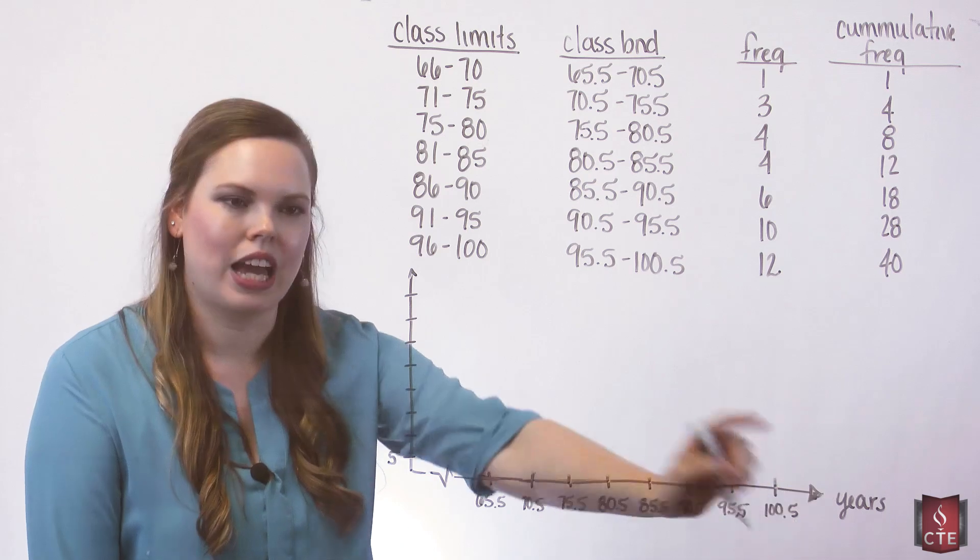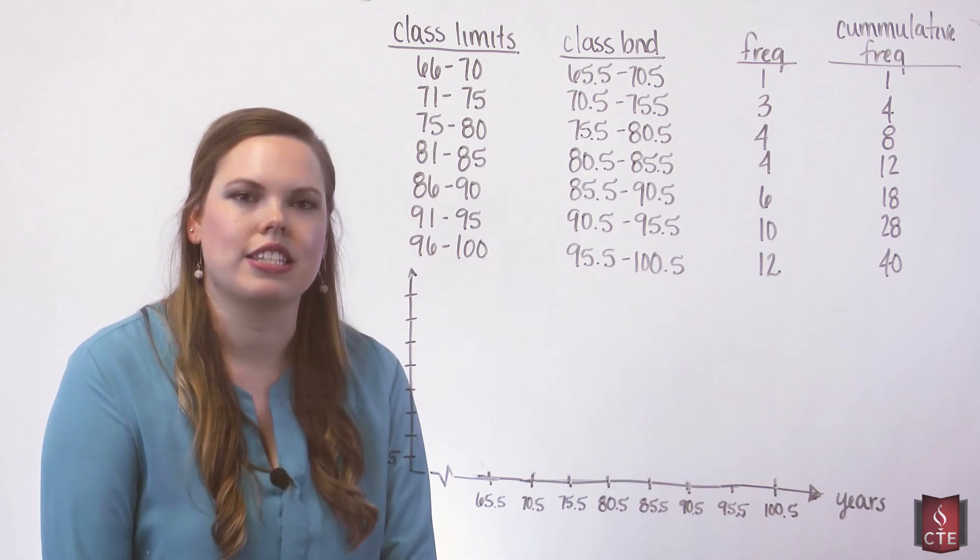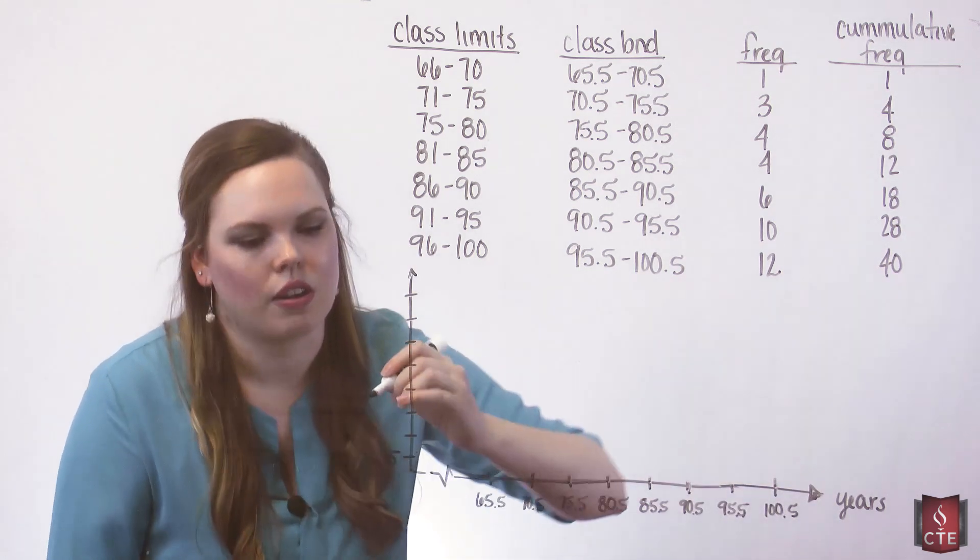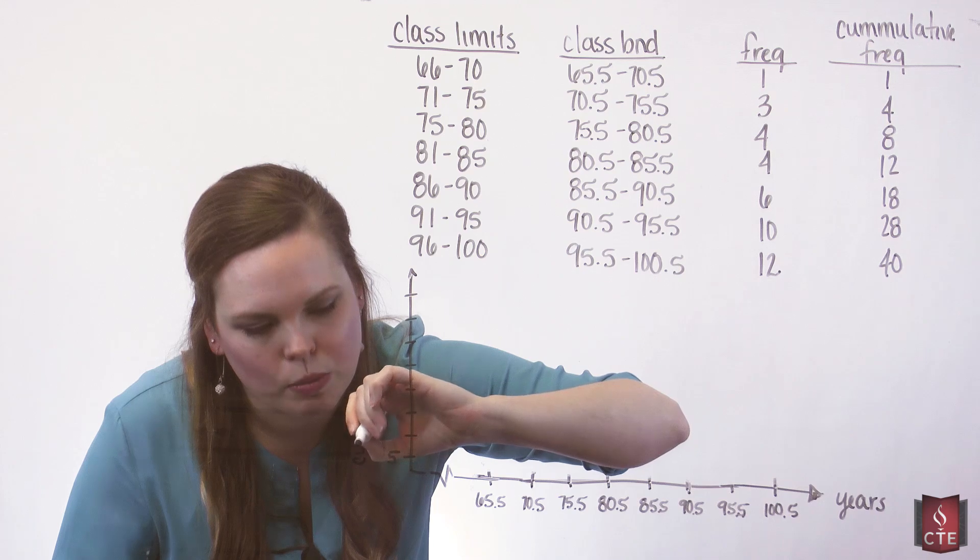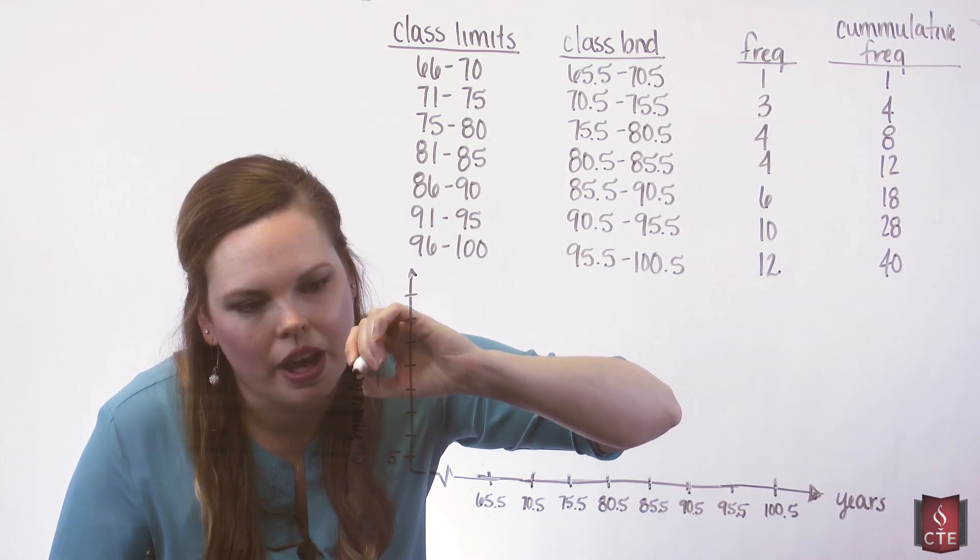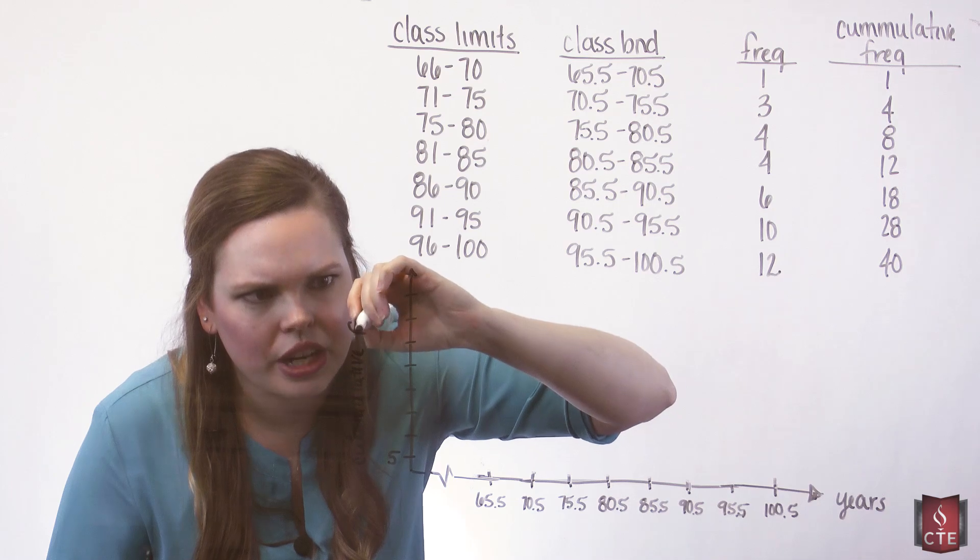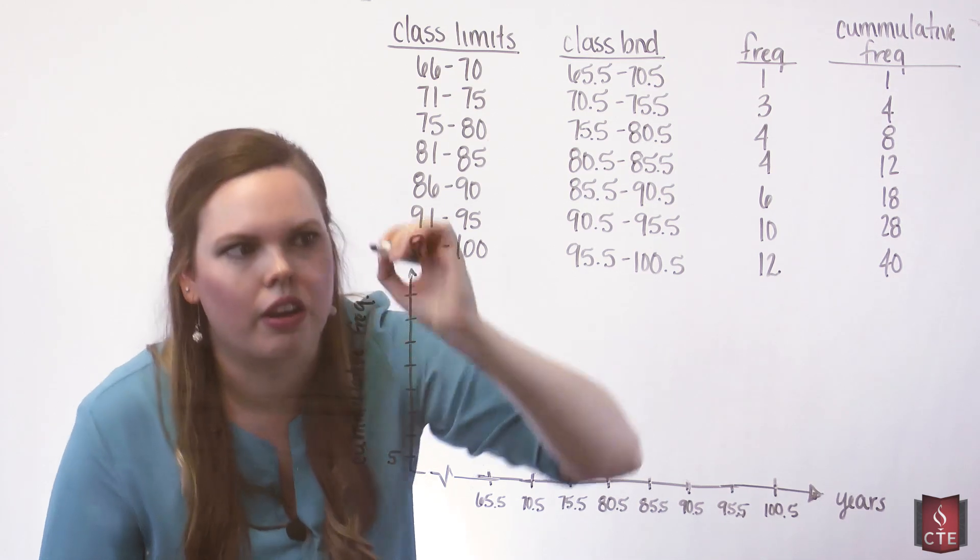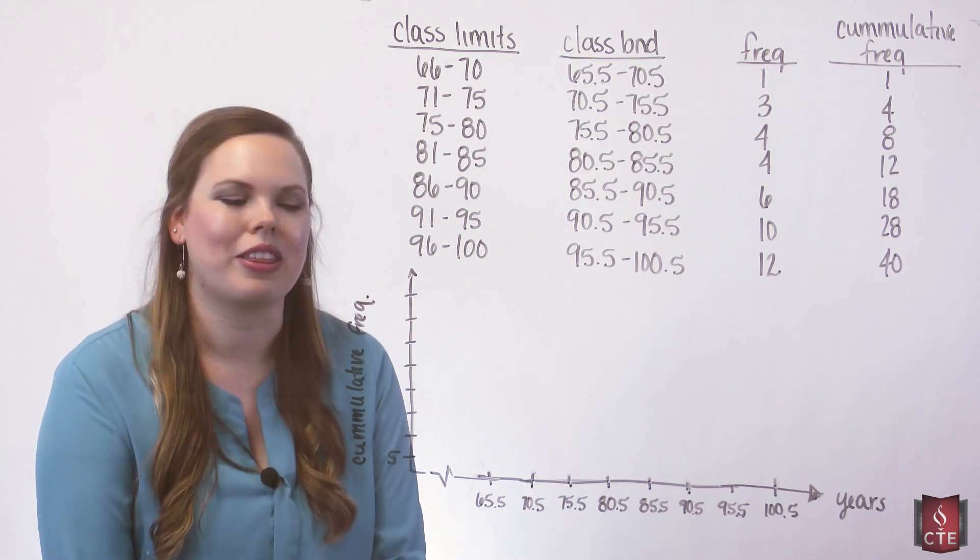I'll label that years and then our vertical axis is our cumulative frequency. So I'll go ahead and label that as well. We always want to label our graphs well so that the readers of our graphs know what we are doing with them.